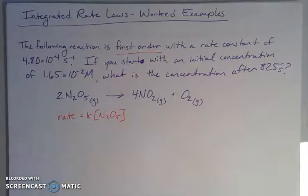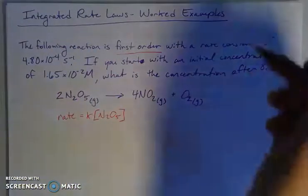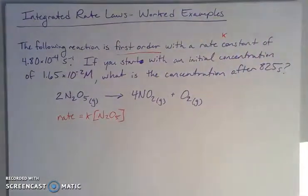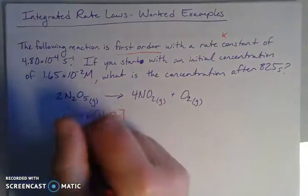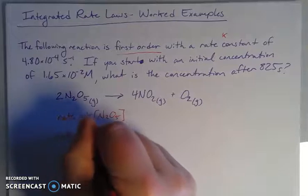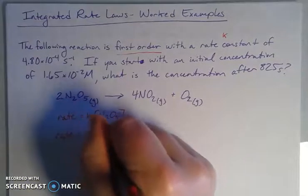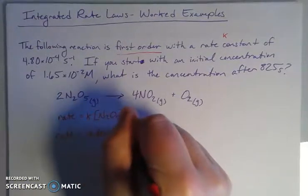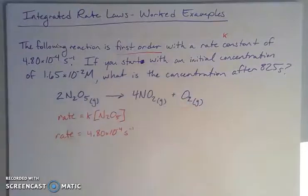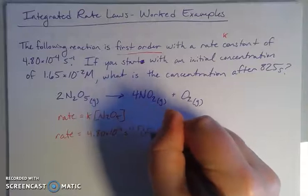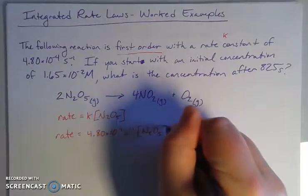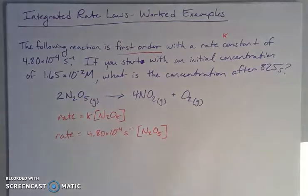Here's my rate law expression just from that piece. Now the rate constant K is given, so I can plug that in. The rate equals 4.80×10^-4 per seconds, one over seconds, times the concentration of dinitrogen pentoxide.